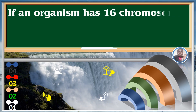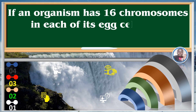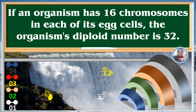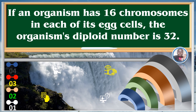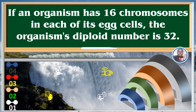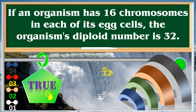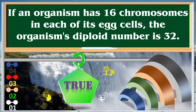If an organism has 16 chromosomes in each of its egg cells, the organism's diploid number is 32. True.